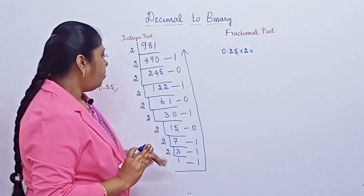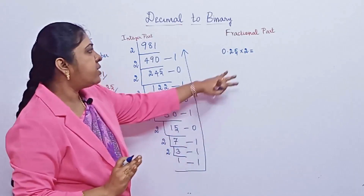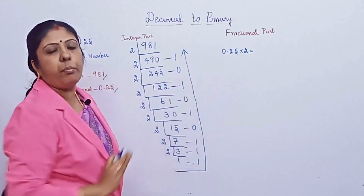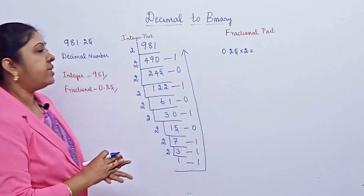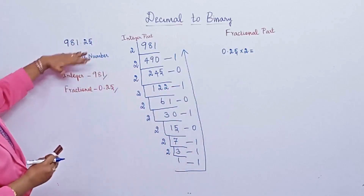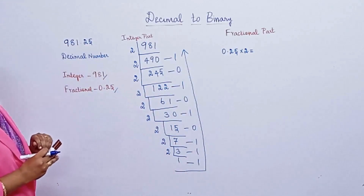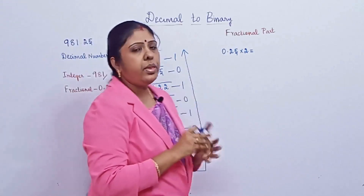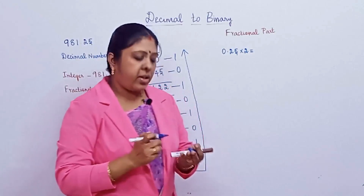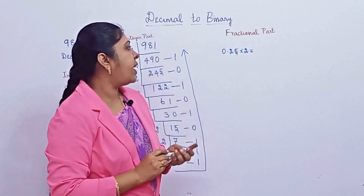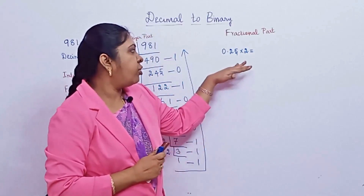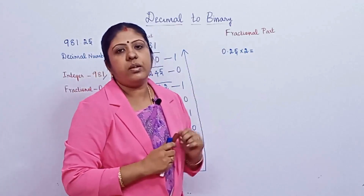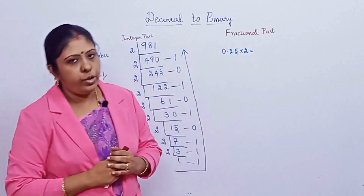Before writing the final answer, let us solve the fractional part. Then we can combine and write the complete answer for the given decimal number 981.25.